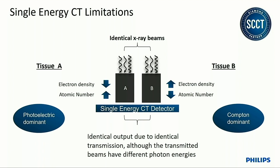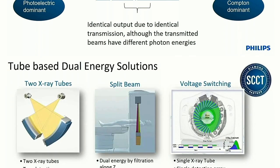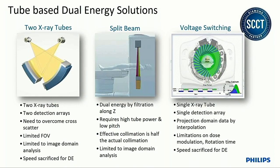Ideally, if we can tease apart the attenuation into these two separate phenomena, we are far along in deciding what the material is. The way to do this is by getting measurements at two different x-ray energies. That brings us to the earlier implementations of dual energy. The first approach uses two x-ray tubes and two detector arrays going around the patient, where every part of the patient is sampled twice — once with a tube at high energy and once at low energy.